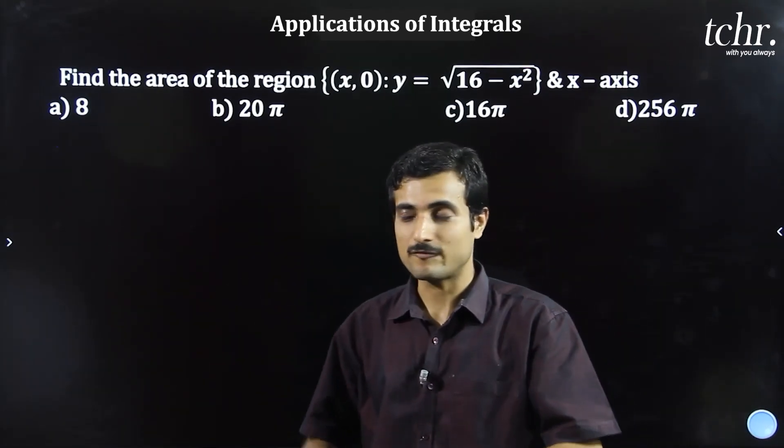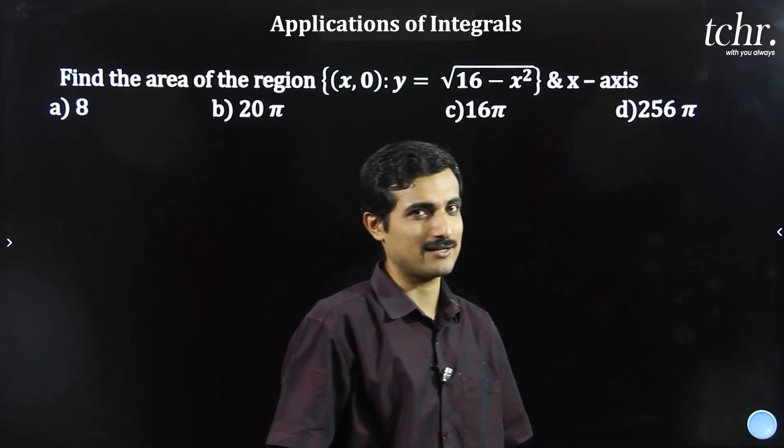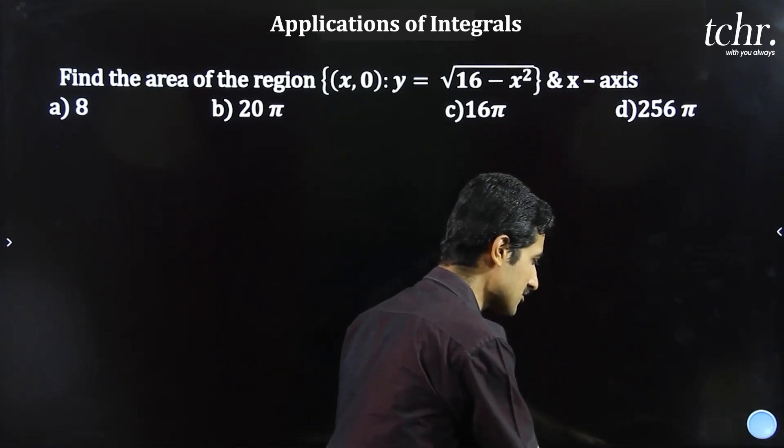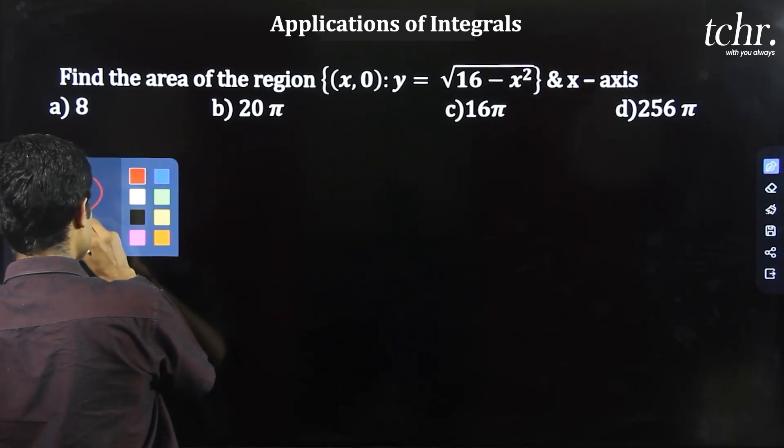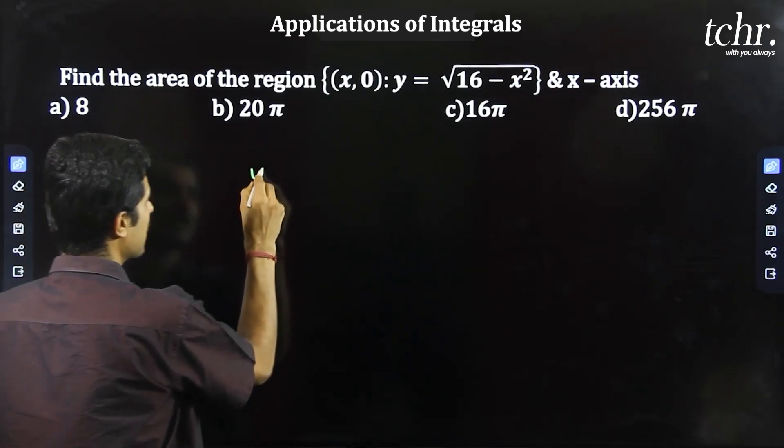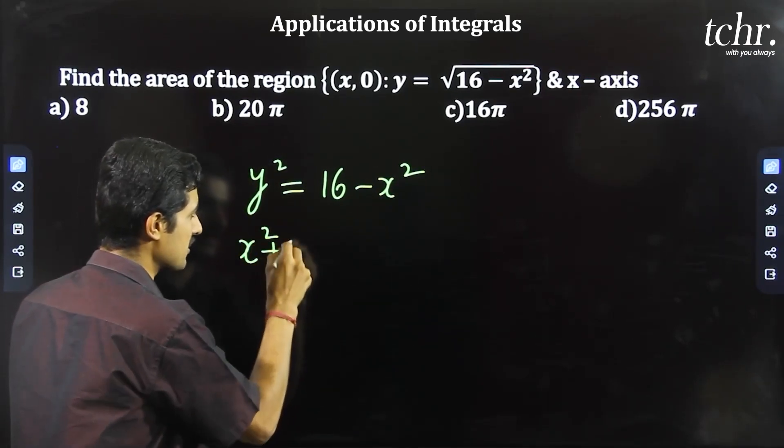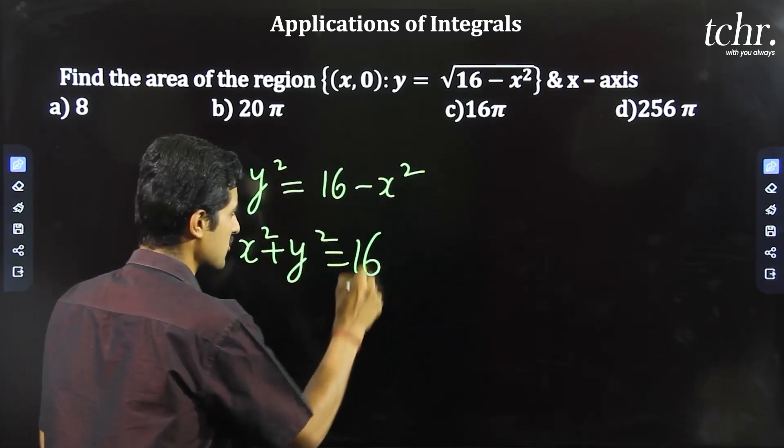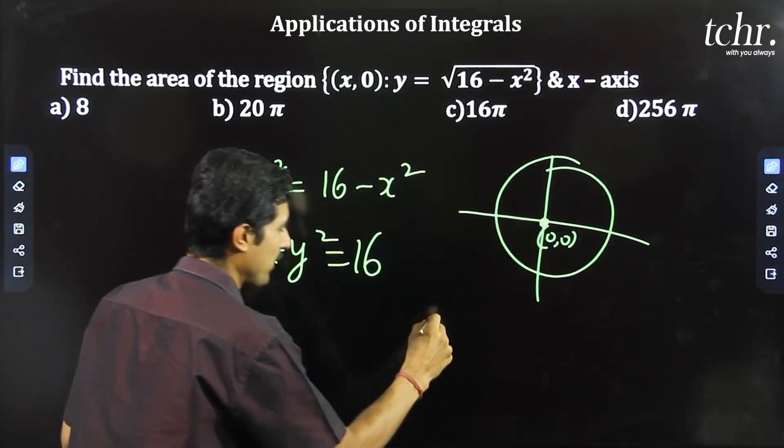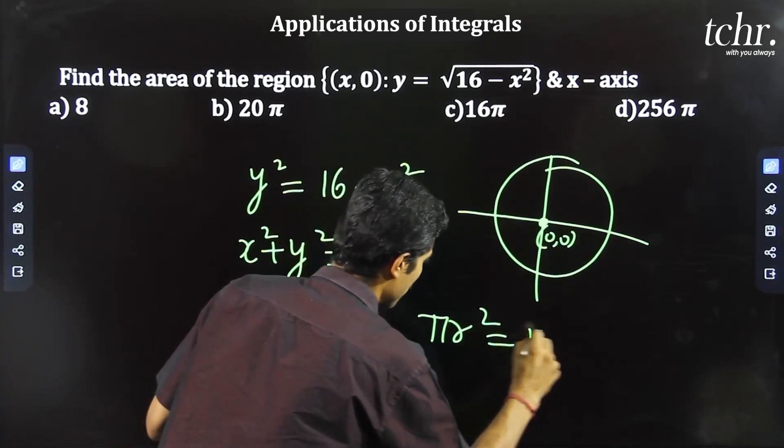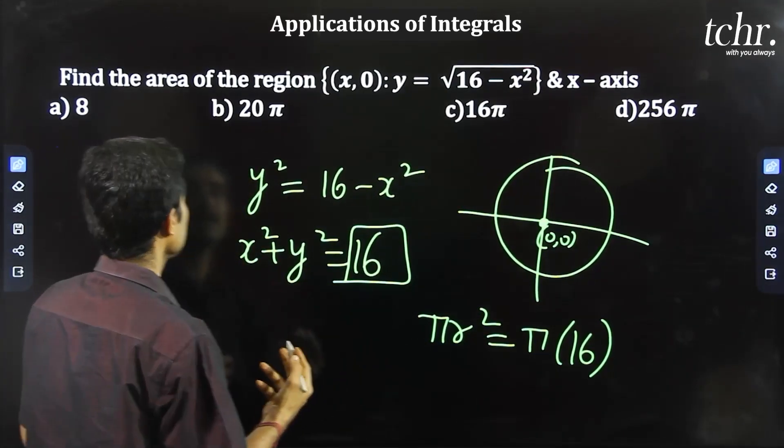So the first question: find the area of the region x comma 0, where y is root 16 minus x square. The equation looks like a circle, isn't it? y square equal to 16 minus x square, so x square plus y square equal to 16 is definitely circle having center as origin. So pi r square is the area, area is pi into 16 because r square is sitting here. 16 pi, correct answer.